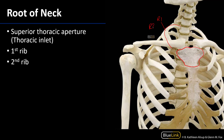Rib 2 is also coming from the c-spine, out and around, and it's articulating at the sternal angle — that's the part of the sternum that sits between the manubrium and the body of the sternum.